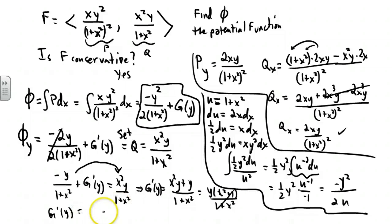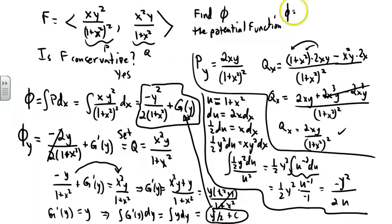So we integrate that with respect to y, and we get y squared over 2 plus a constant. And so we just take that and now replace g of y with that. So the final result is that phi is minus y squared over twice 1 plus x squared plus y squared over 2 plus a constant. That was a tough one, but it worked out.